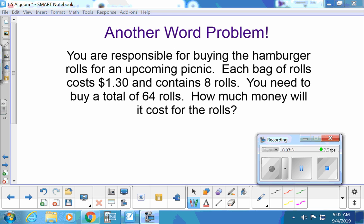You are going to buy hamburger buns for an upcoming picnic. Each bag of buns, I don't know why they're calling them rolls. I call them hamburger buns. Each bag of buns costs $1.30 and has eight rolls. But we need 64 hamburger rolls. So how much money will it cost us? What do we think we should do first? We should probably figure out how many packages of buns we should buy, right? We do that by doing what? 64 divide it by eight. Very good.